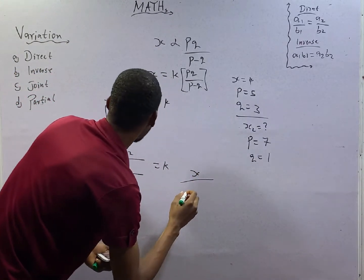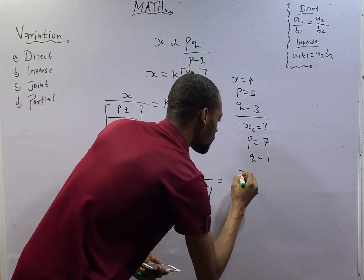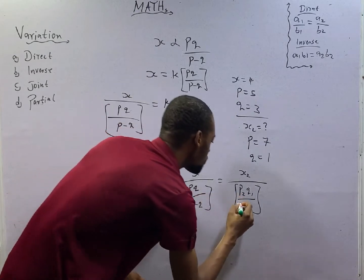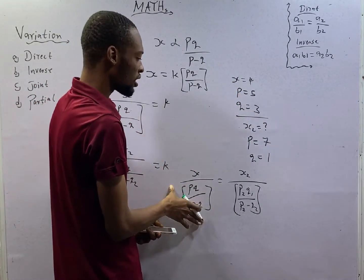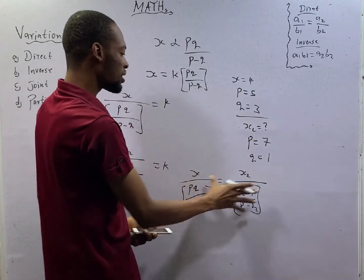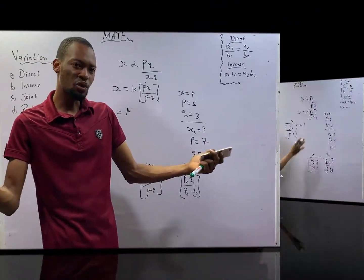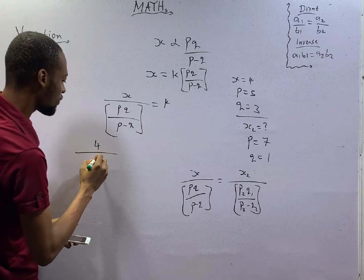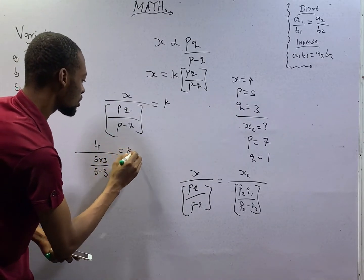S over P times Q over P minus Q equals S2 over P2 times Q2 over P2 minus Q2. This is your P1, Q1, S1, and this side is your S2, P2 is 7 and Q2 is 1. Let's solve the hard way. To look for the constant of proportionality, S is 4 over P times Q, that's 5 times 3, all over P minus Q, 5 minus 3. This equals K.